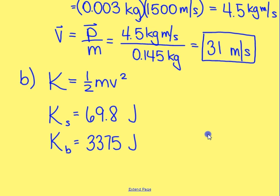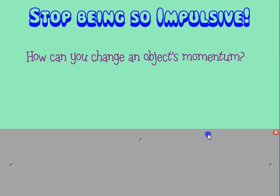So that's momentum — a fairly simple concept, but we use it in some complex ways. One example is something called impulse. To understand impulse, let's first think about how you could change an object's momentum.